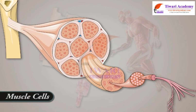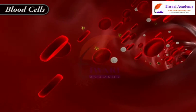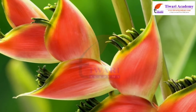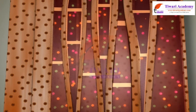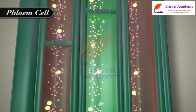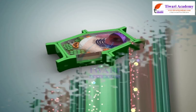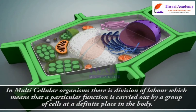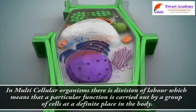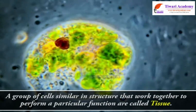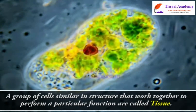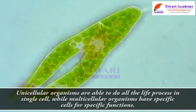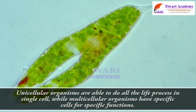Muscle cells contract and relax to cause movement. Blood cells transport oxygen, food, hormones, and waste materials. In plants, xylem and phloem cells conduct food and water from one part to another. In multicellular organisms, there is division of labor — a particular function is carried out by a group of cells at a definite place in the body. A group of cells similar in structure that work together to perform a particular function are called tissue.